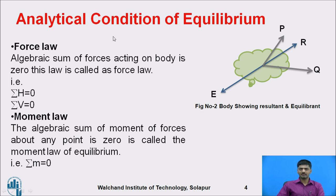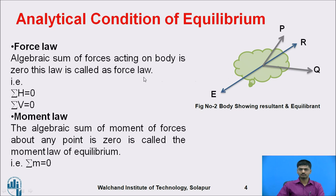Two conditions are present, which we call the analytical conditions of equilibrium. The same figure shows a number of forces acting on a body. To identify the unknown forces, we consider two laws. The first is the force law: the algebraic sum of forces acting on a body — whether P, Q, or others — equated to zero. We consider summation H equal to zero (all horizontal forces) and summation V equal to zero (all vertical forces).